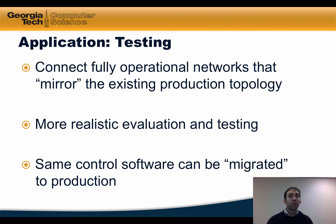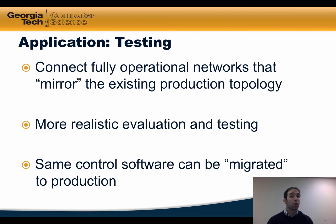One application of network slicing is testing. Using slicing, an operator could connect a fully operational network that essentially mirrors the existing production topology. This type of slicing can allow for more realistic evaluation and testing because the same control software used in the mirrored network can simply be migrated to the production network, and the operator can have assurance that the same control logic and software tested in the shadow network will operate the same way in the production network.